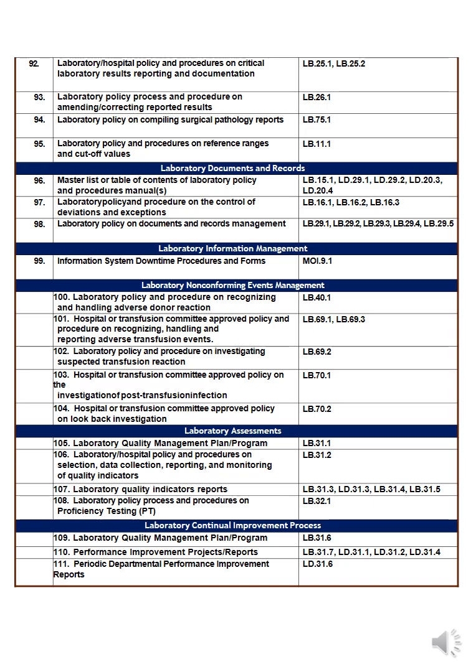Moving to laboratory assessment, starting at number one hundred and five: the laboratory quality management program. Tell me what you are planning for quality — what quality improvement methodology you are using, records, data collection, analysis, presentation, and reports. Number one hundred and six is the laboratory/hospital policy and procedure on selection of quality indicators (KPIs): how to select, collect, and report data (tabular or graphic), monitor it, and what quality indicators you have — such as critical test results, TAT, number of lost specimens, and rejected specimens.